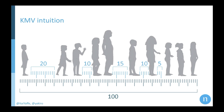With K equal to four, we need to take and store only the four minimal distances. In this case, it's going to be five, ten, fifteen, and ten.